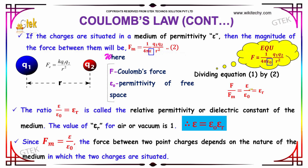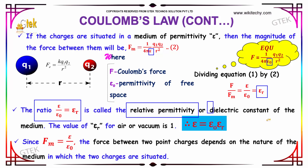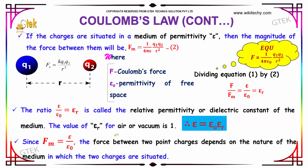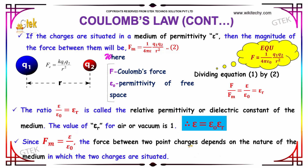So F divided by Fm equals epsilon divided by epsilon 0, which is nothing but epsilon r, the relative permittivity. The ratio of epsilon divided by epsilon 0 equals epsilon r, considered to be the relative permittivity or dielectric constant of the medium. The value of epsilon r for air or vacuum will be 1. Thus the force between two point charges depends on the nature of the medium in which the two charges are situated.